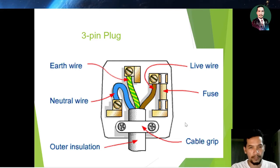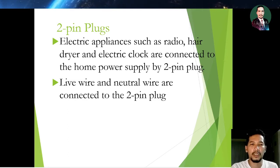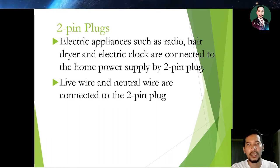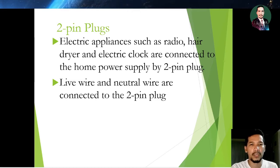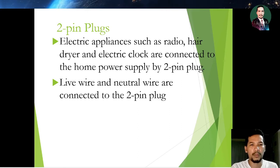Other than three pin plugs, we also have two pin plugs. Electrical appliances such as radios, hair dryers, and electric clocks are connected to the home power supply by a two pin plug. For a two pin plug, the live wire and the neutral wire are connected to the two pins.